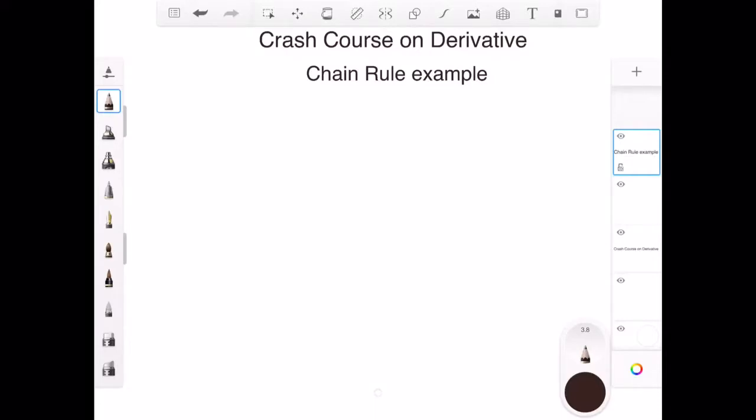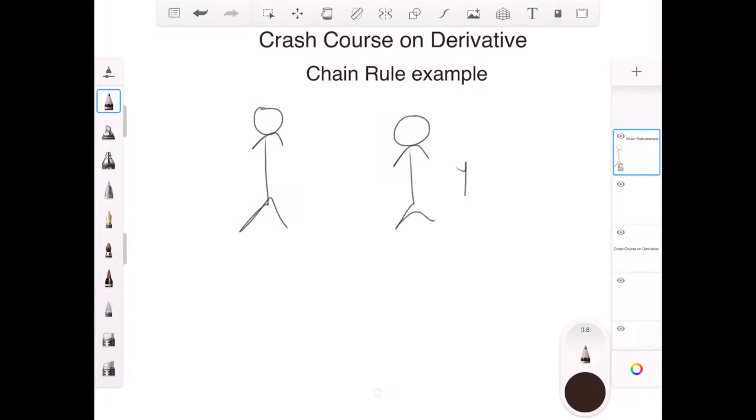I tend to put analogy with real life whenever I have to explain something complex or something not very common, right? In this case, the chain rule. For example, you have a friend, and he's mad at you. This is you, and this is your friend A.